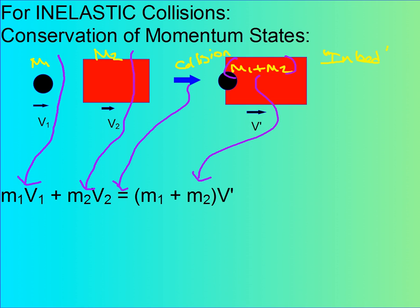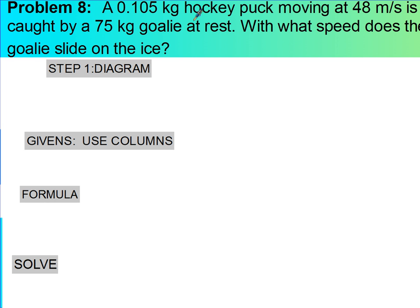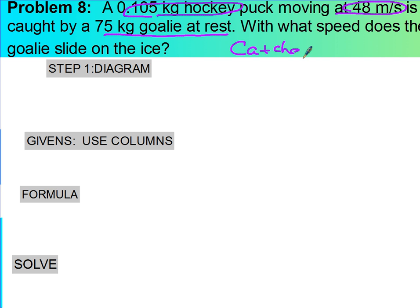Let's work the problem. Suppose I have a 0.015 kg hockey puck moving at 48 meters per second, and it's caught by a goalie who's at rest. With what speed does the goalie slide on the ice? We need to use a little bit of common sense here. The goalie isn't moving to start with, but he does catch it. So we know this is going to be an inelastic collision because the implication is he catches and doesn't drop the hockey puck.